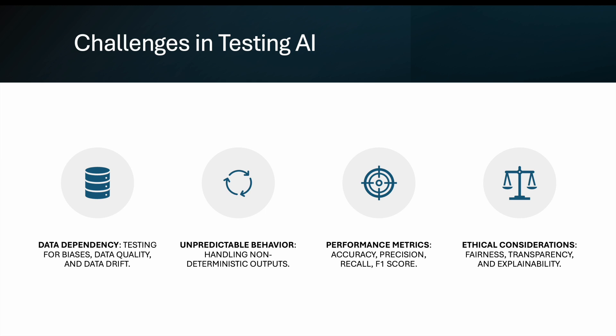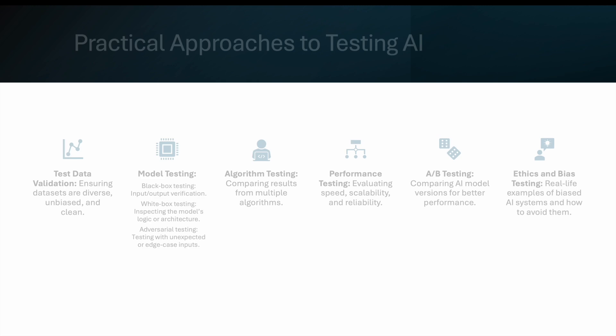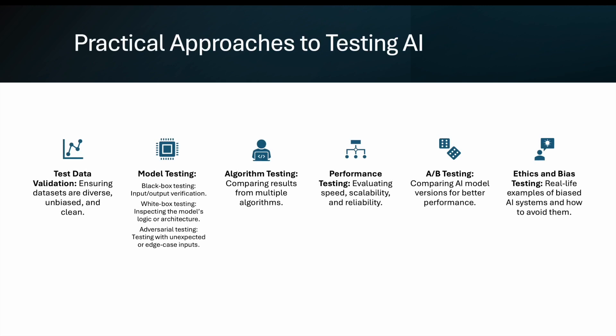Now, practical approaches to actual testing — the core principles remain the same. First, test data validation: ensure data sets are diverse and unbiased. Whatever data we are using should be unbiased, diverse, and clean enough for the model to be trained on. It should also be usable in real-life scenarios, not just test one, test two, test three. AI systems mostly understand practical approaches, so your data should reflect that.